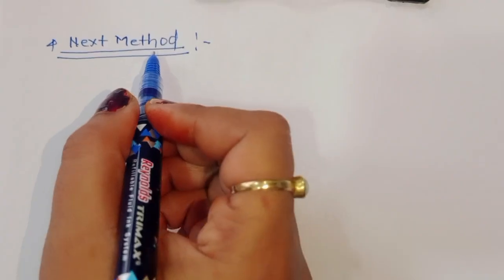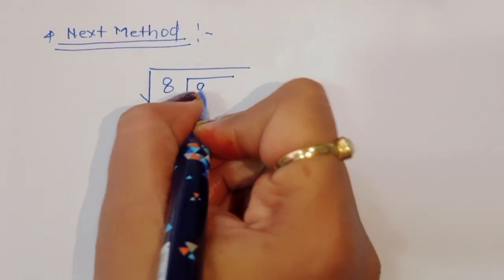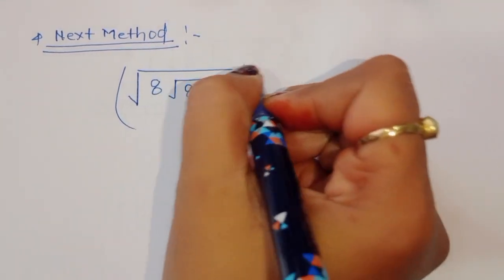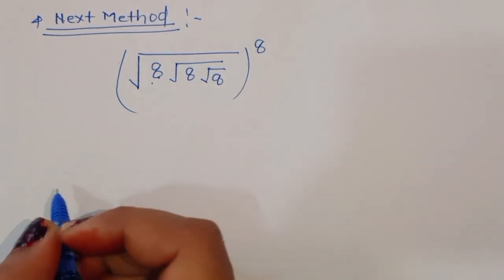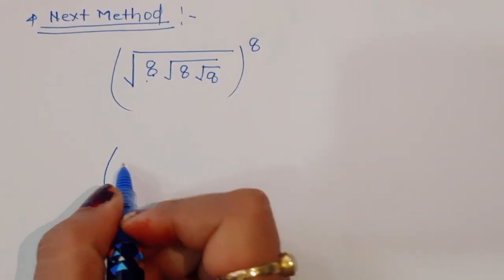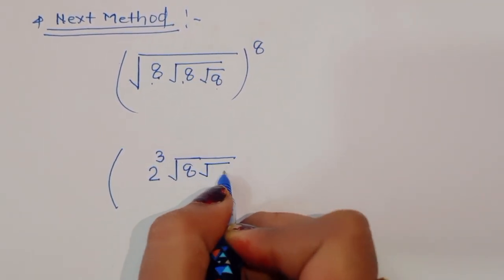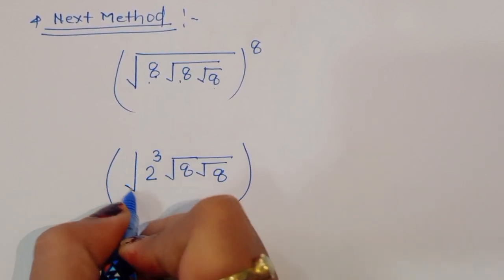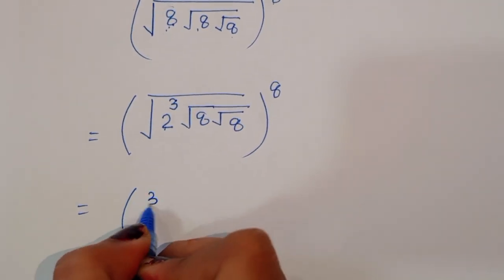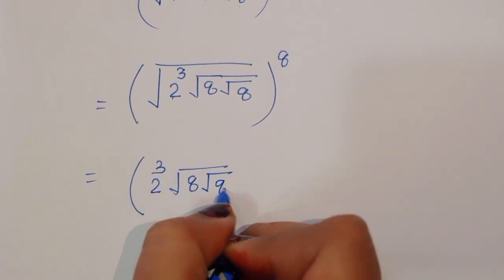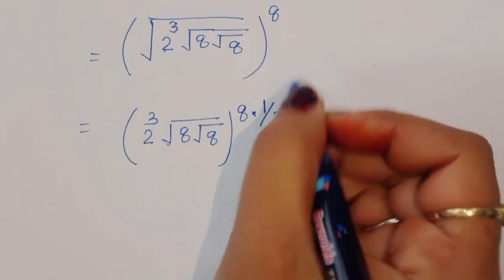Now we are using the second method. The question is: 8 times square root of 8, square root of 8, square root of 8, all raised to power 8. We can write 8 as 2 power 3. So we have 2 power 3 times square root of 8 under square root of 8 under square root of 8, raised to power 8, and applying the square root gives times 1 by 2, so we cancel to get 2 power 3 raised appropriately.